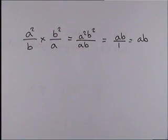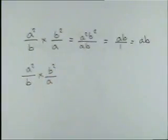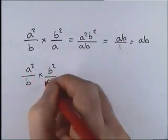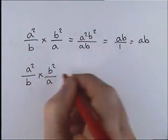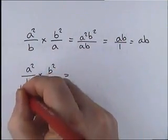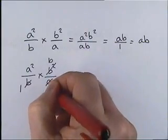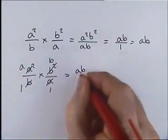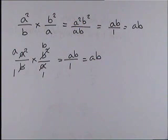Watch the video on simplifying algebraic fractions if that was a bit quick. We could also have cancelled the question first. That b is a common factor between the two b terms — b divided by b gives 1, and b squared divided by b gives b. And a divided by a gives 1, and a squared divided by a gives a. So we're left with a lots of b over 1, which is ab. Same answer.